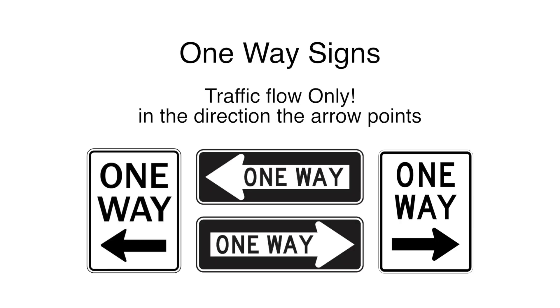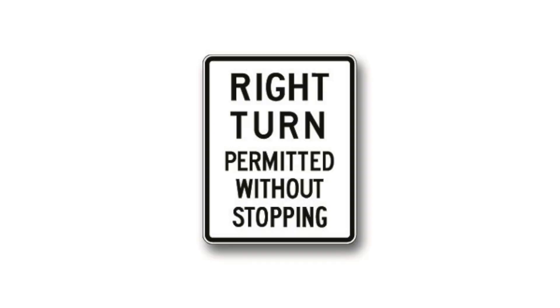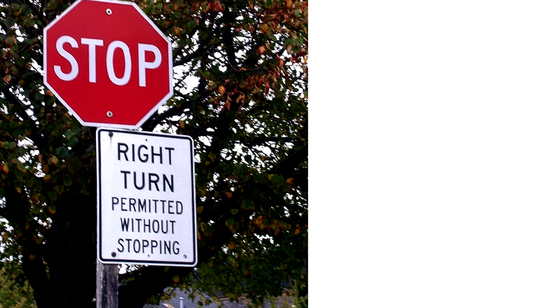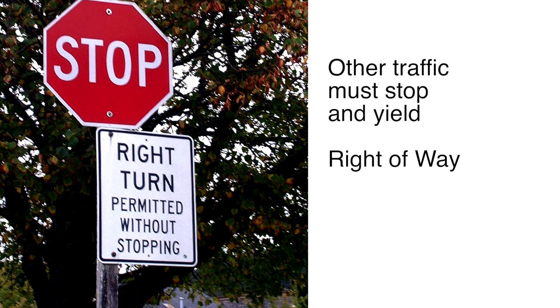One Way: Traffic flows only in the direction that the arrow sign points. Right turn permitted without stopping: This sign may appear below a stop sign. Traffic turning right may turn without stopping. Other traffic must stop and yield right-of-way.